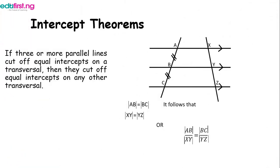Now we move to intercept theorems. The first theorem states: if three or more parallel lines cut off equal intercepts on a transversal, then they cut off equal intercepts on any other transversal. Mathematically, line AB equals line BC, and line XY equals line YZ — or equivalently, AB/XY equals BC/YZ.